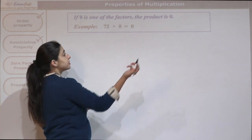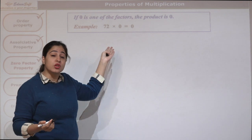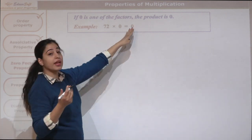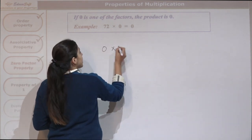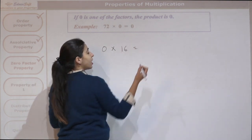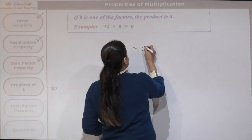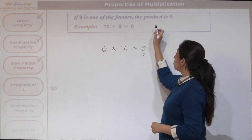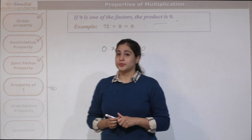72 times 0 — any number times 0, or 0 times any number, we are going to get 0. Suppose we have 0 times 16; again the product is going to be 0. So if one of the factors is 0, the product is always 0.